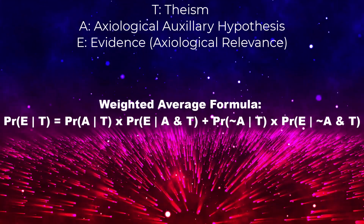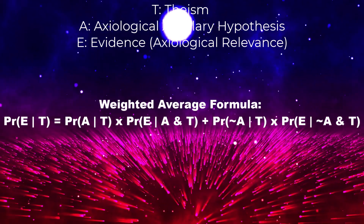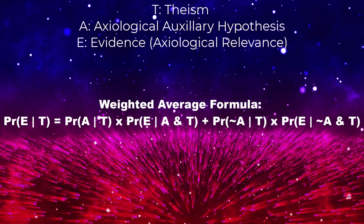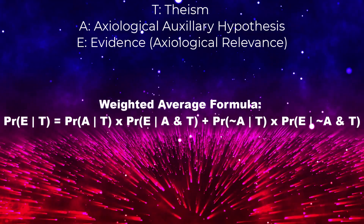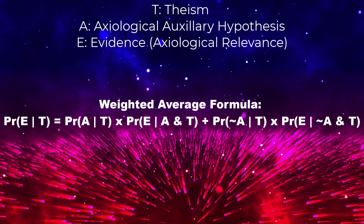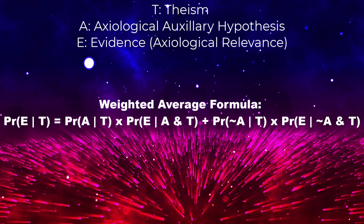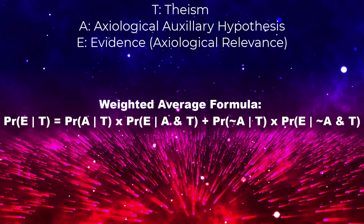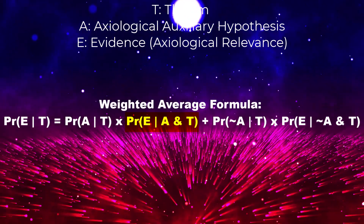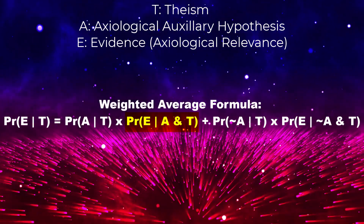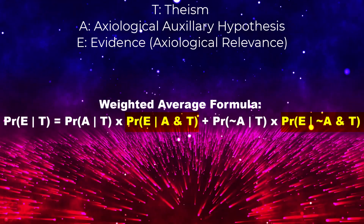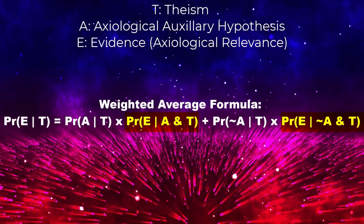In confirmational holism, the weighted average formula considers the conditional probability of observing evidence E given both scenarios: the supportive axiological auxiliary hypothesis A and T, and the negation of the auxiliary hypothesis, not-A and T. It takes into account the interdependencies and mutual support among beliefs. If the axiological auxiliary hypothesis A is not in tension with theism and follows our confirmation rules, then P(E|A,T) will likely be higher compared to P(E|¬A,T). This means that finding evidence E supports the auxiliary hypothesis, reinforcing the collective confirmation of the belief system.